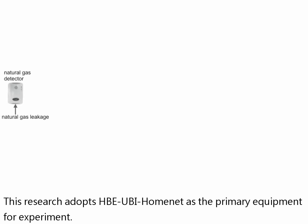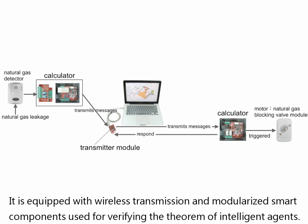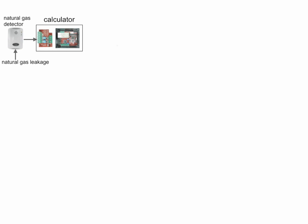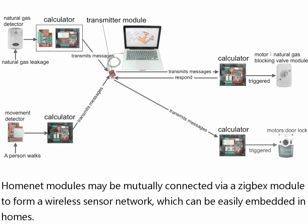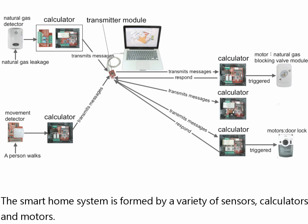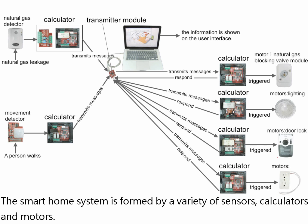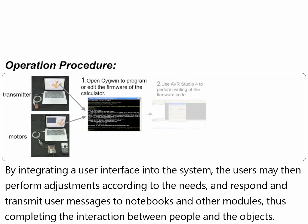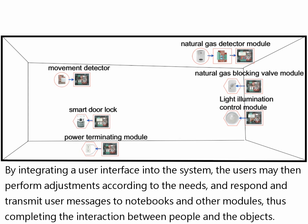This research adopts HBE-UBI HOMENET as the primary equipment for experiment. It is equipped with wireless transmission and modularized smart components used for verifying the theorem of intelligent agents. HOMENET modules may be mutually connected via a ZigBee module to form a wireless sensor network, which can be easily embedded in homes. By integrating a user interface into the system, users may perform adjustments according to their needs and transmit user messages to notebooks and other modules, completing the interaction between people and objects.